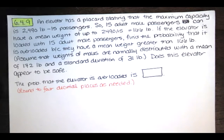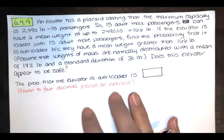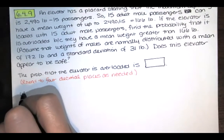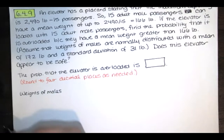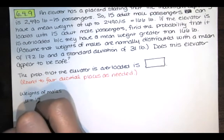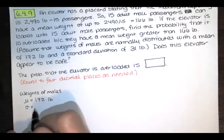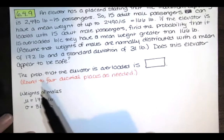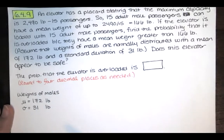The question also asks: does this elevator appear to be safe? First, we want the probability that the elevator is overloaded. Now, when we're talking about the weights of males, we were given that the weights of males are normally distributed with a mean of 172 pounds and a standard deviation of 31 pounds. But we're not actually talking about the weights of males here — we're talking about the mean weight of a sample of males.